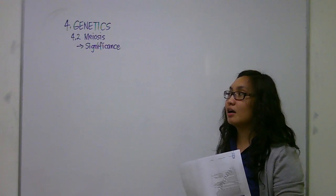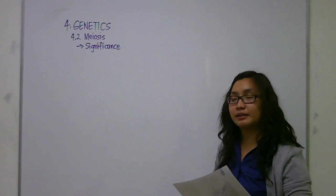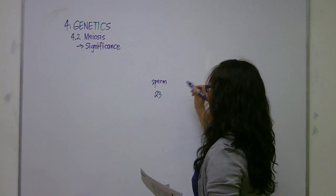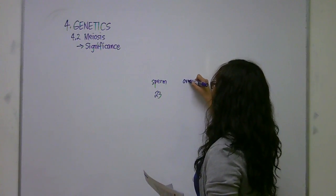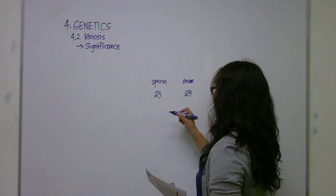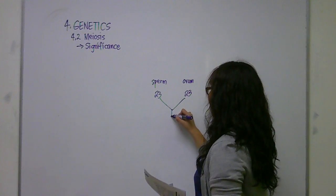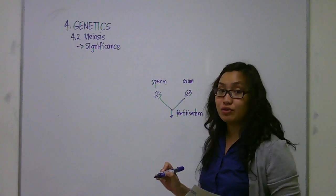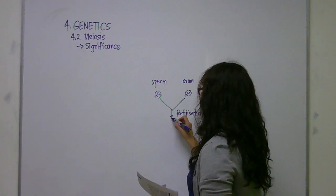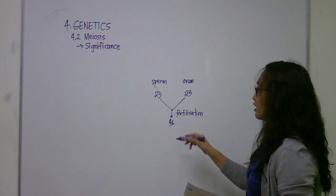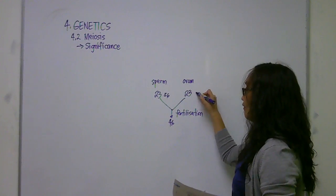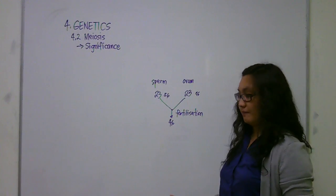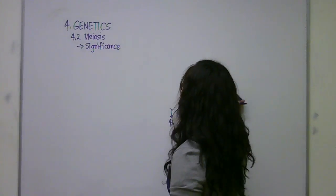It's because if the sperm cell is going to have 23 chromosomes and the ovum is going to have 23 chromosomes as well, when they fuse together in the process of fertilization, fertilization is going to restore the diploid amount of chromosomes. It's not logical that the sperm cell will have 46 and the ovum will have 46 as well, because whenever they fuse together, it will have a different number of chromosomes in the end. That's the significance of meiosis.